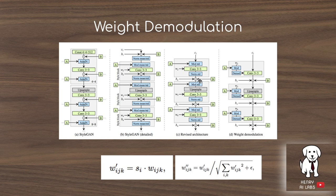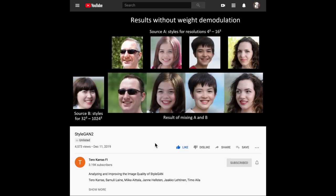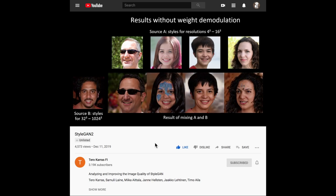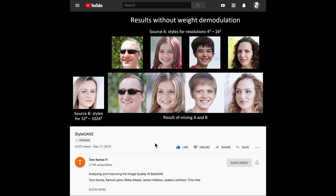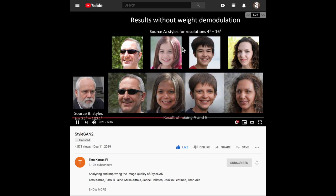The next idea is to get away from adaptive instance normalization and instead use weight demodulation layers. The idea is that you scale the parameters using S sub i from the W latent vector, and then demodulate to assume the features have unit variance — changing the weight parameters of the 3x3 convolutional layer instead of having an intermediate modulation and normalization layer. Their video shows an ablation of what style mixing looks like without weight demodulation: you see odd artifacts introduced when mixing the styles between images.